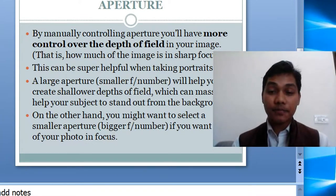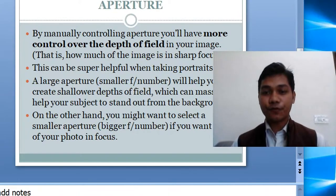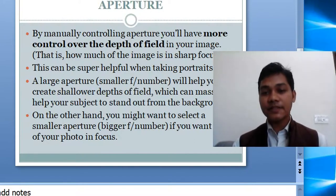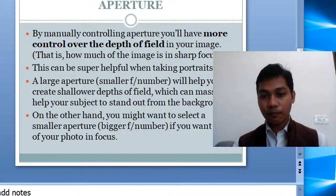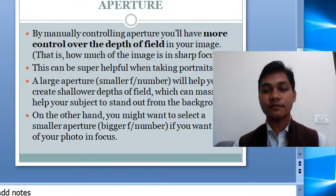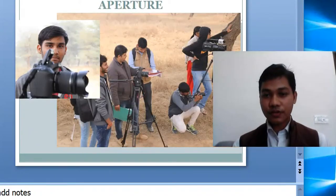By manually controlling aperture, we have more control over depth of field in your image — that is, how much of the image is in focus. This is helpful for portrait photography, which is the photography of an individual. Aperture is determined by the F-number. If the F-number is small, the aperture will be large, giving you a shallow depth of field, which is helpful for portrait photography — your background will be blurred and focus will be on the subject. On the other hand, a smaller aperture with a bigger F-number gives focus to all subjects in your frame.